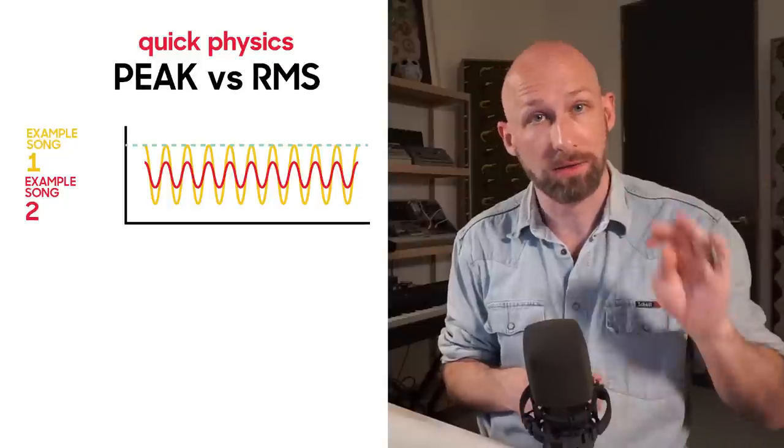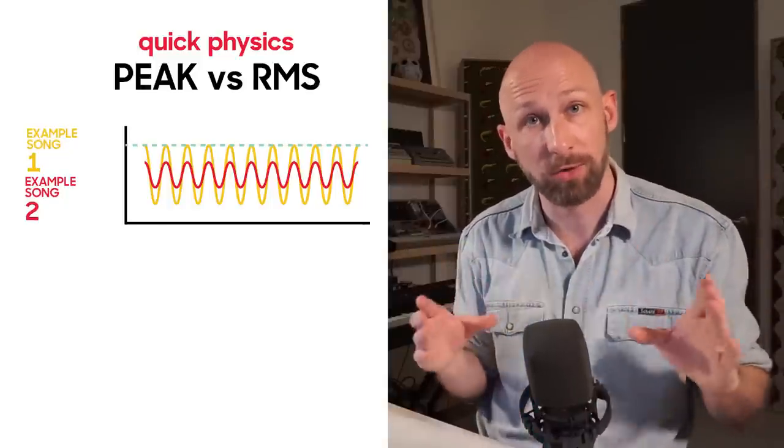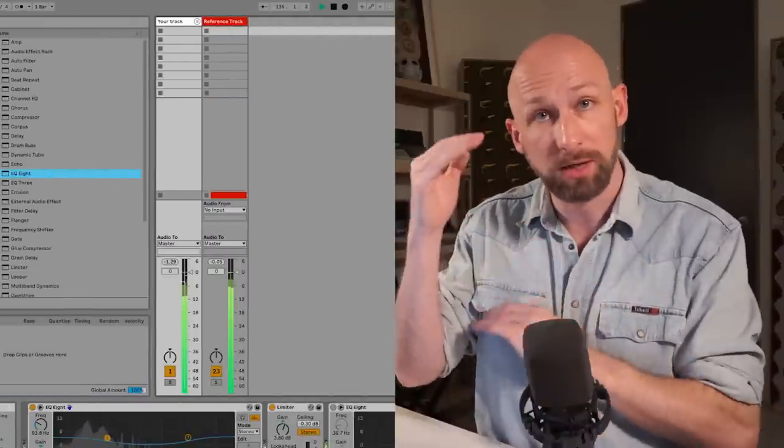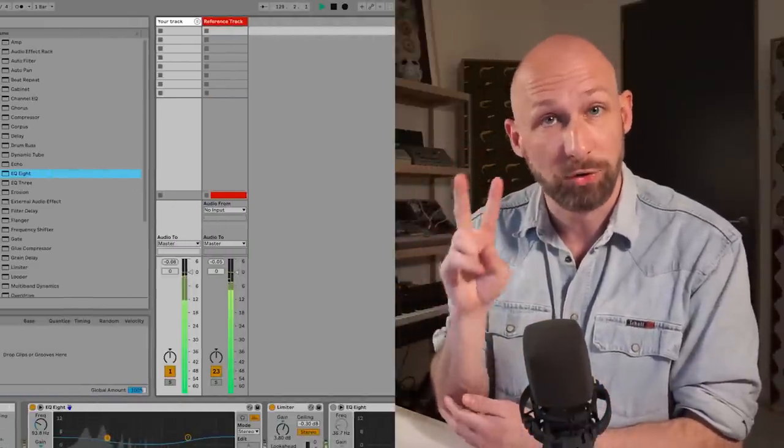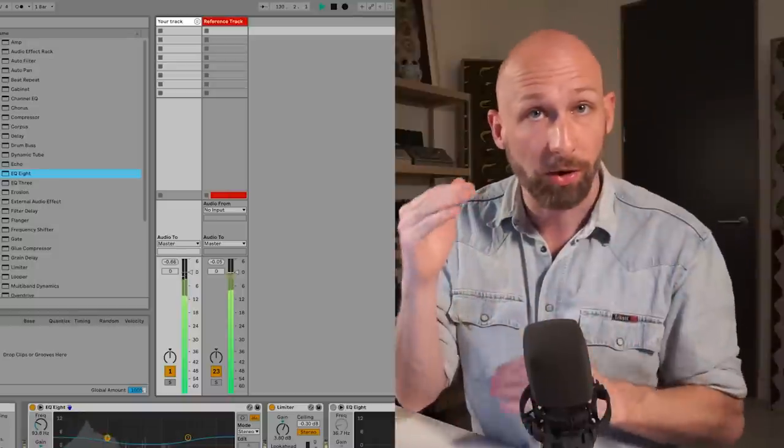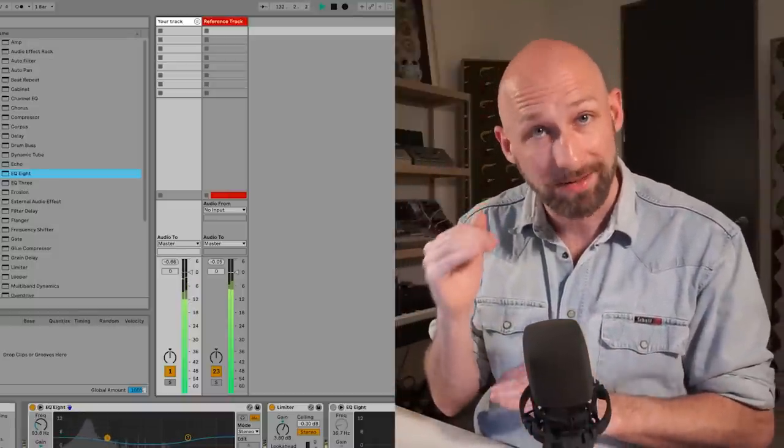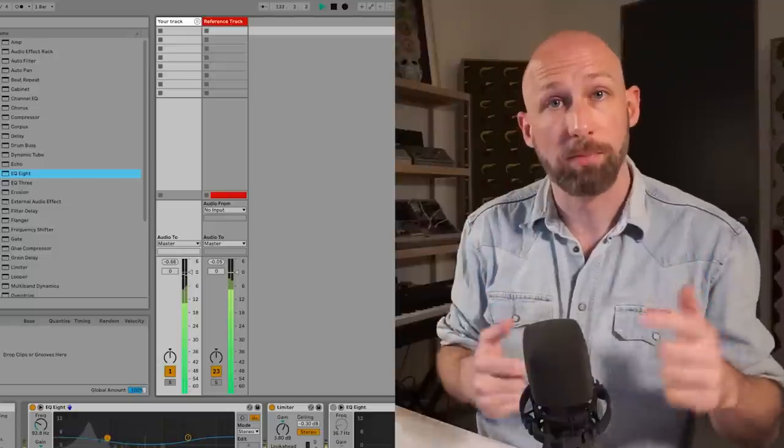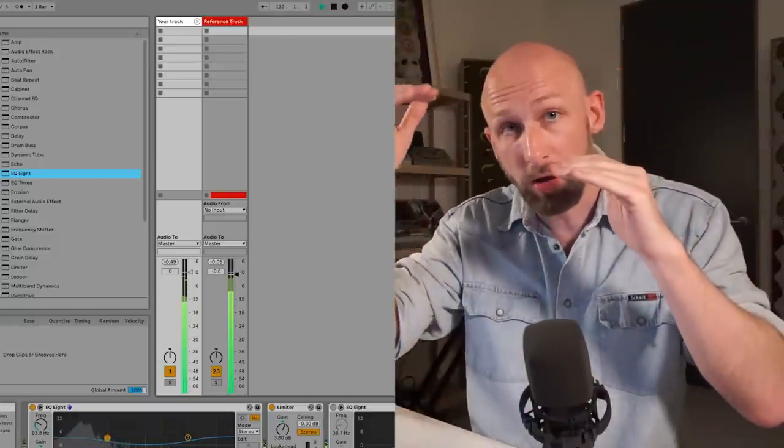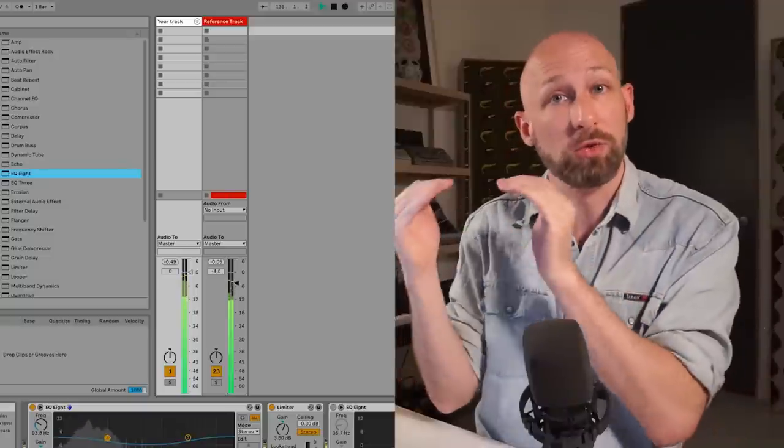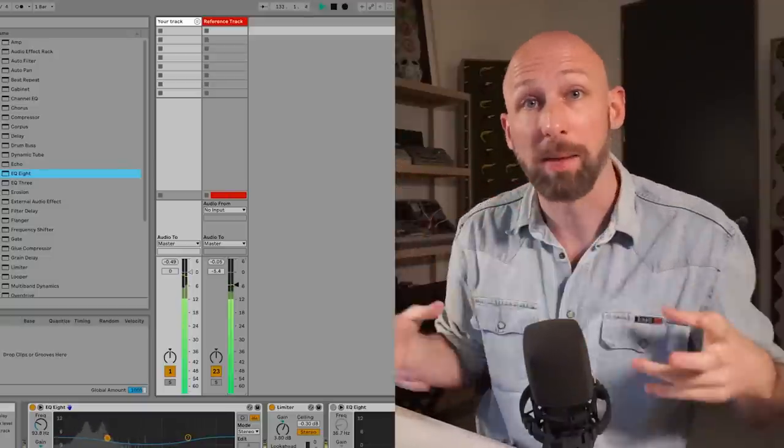If you understand the difference between peak and RMS now conceptually, you've also seen this in Ableton Live in session view. If you go look at the meters, there's two different types of volumes being represented there. There is the transparent green, which is peak volume, and then there's the darker green which sits below, and that's the RMS. So if you want to compare your tracks to a reference track, just bring down the volume of the reference track until you see the full green bars jumping next to each other.